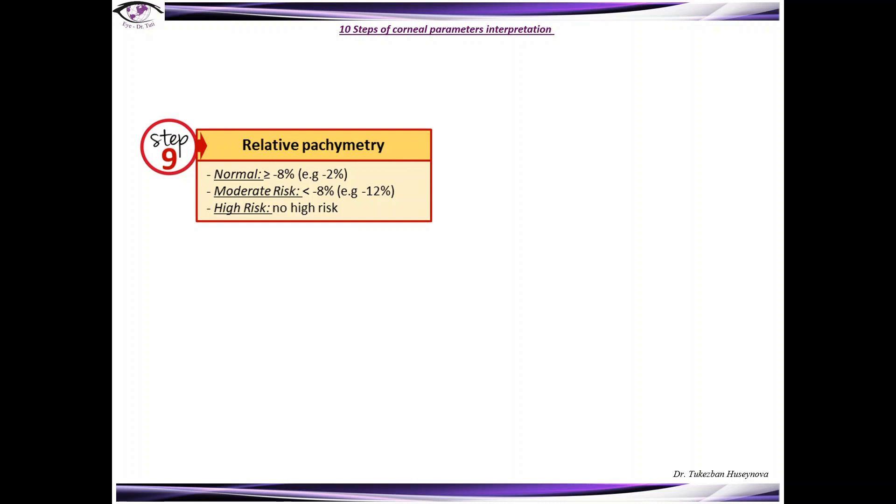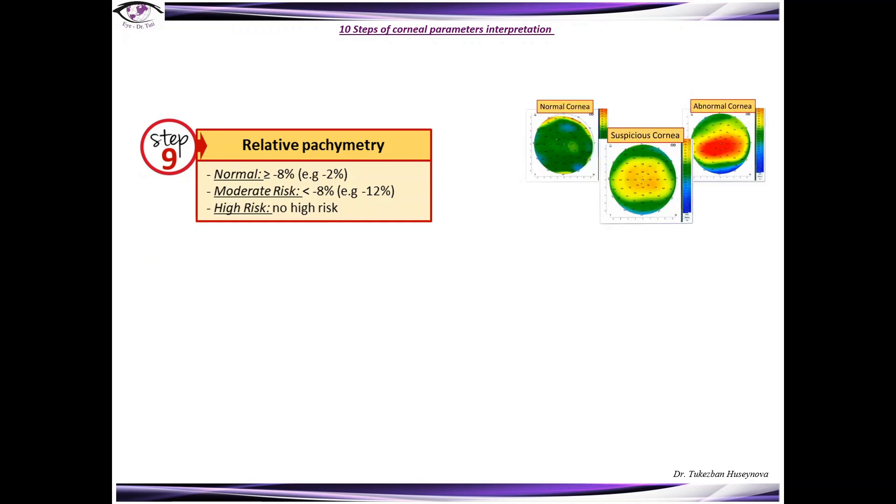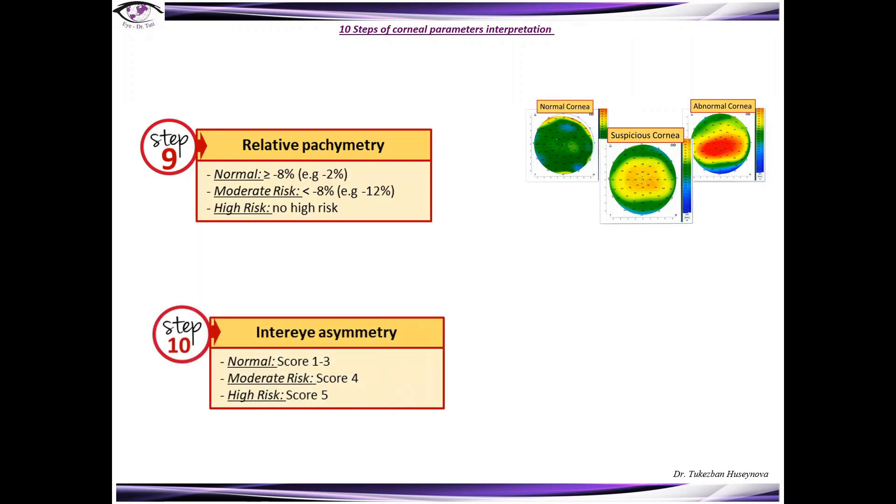Step 9: Evaluate relative pachymetry and describe the patterns. Make sure that your cornea has a normal pattern or document in case of suspicious or abnormal cornea. The normal value of relative pachymetry should be more or equal to minus 8%. And final step number 10, inter-eye asymmetry. The normal score, as I already said, should be between 1 and 3.